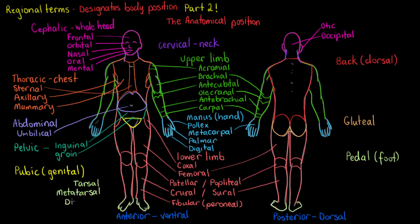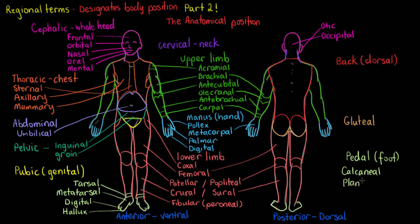Moving on to the anterior portions of the pedal region — the foot. We've got the tarsal, metatarsal, and digital regions. As with the hand, we've also got the hallux — the term we use to describe the big toe, just like we use pollux to describe the thumb. The tarsal is the ankle area on the anterior aspect, metatarsal is named after the metatarsal bones on the front, and digital refers to our toes. The regions only visible from the posterior aspect are the calcaneal and the plantar. The calcaneal is your heel, and the plantar region strictly refers to the inferior aspect of your foot — the base of your foot.